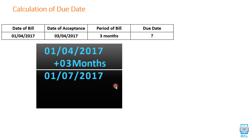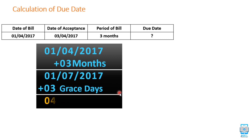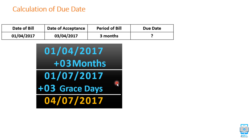The answer is not 1st July, because as per the Negotiable Instrument Act, we have to add 3 grace days also. So if we add 3 grace days, the final answer becomes 4th July 2017. This final due date is called the legal due date, and the date before adding 3 grace days is called the nominal due date.